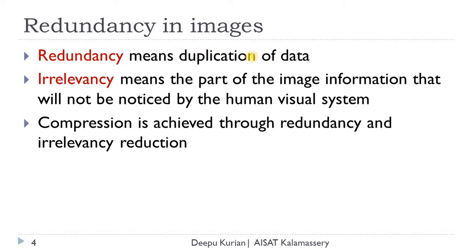Irrelevancy is more related to the human visual system (HVS). Irrelevancy means the part of image information that will not be noticed by the human visual system. Some image information is not much relevant or noticeable for a human visual system. Even when it comes to the primary colors like RGB, green is considered to be more relevant than the other primary colors because of the properties of the human visual system. These two properties — redundancy and irrelevancy of natural images — are employed for compression.